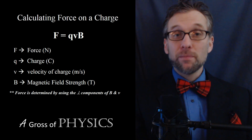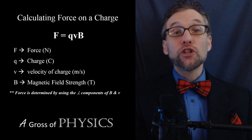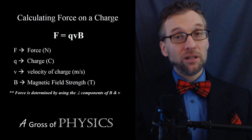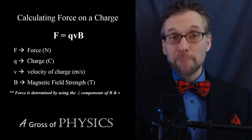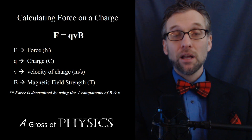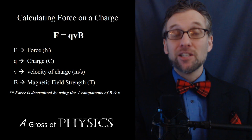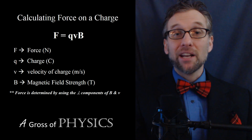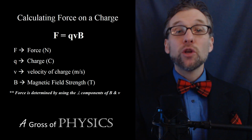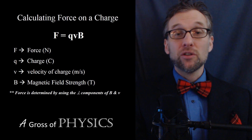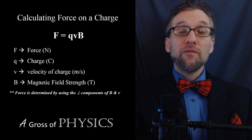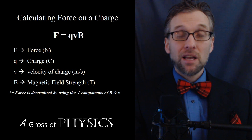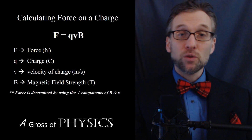F is the force measured in newtons. Q is the charge of the particle — it could be a single proton, a single electron, or a combination of many electrons or protons. V is how fast it's moving through the field, and B is the magnetic field strength in teslas. So Q is in coulombs, V in meters per second, and B in teslas, and those combine to form a force.